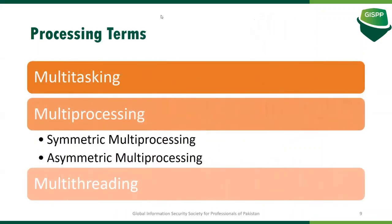Within the processor, you have different terms: multitasking, multiprocessing, and multithreading. Multitasking means the processor can handle multiple tasks simultaneously — a task is any request sent to the processor. In a normal computer, you can run Word, Excel, Internet Explorer, etc. — all treated as tasks. Within those tasks there will be multiple threads, which are sent to the CPU to handle and return output.